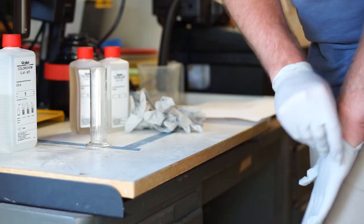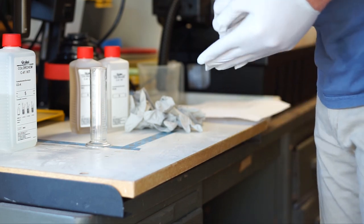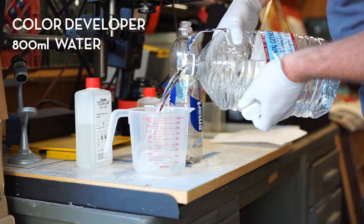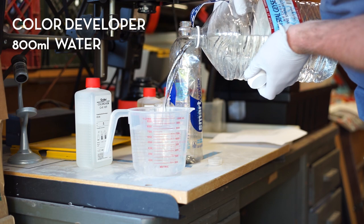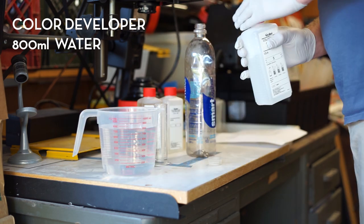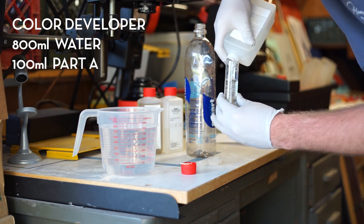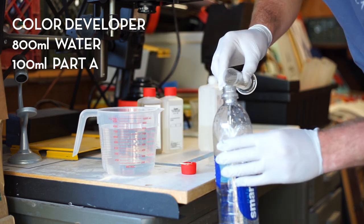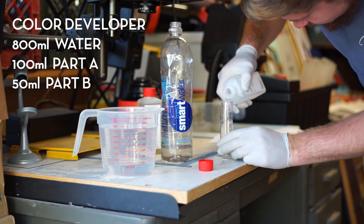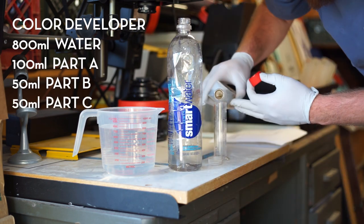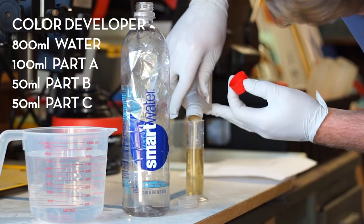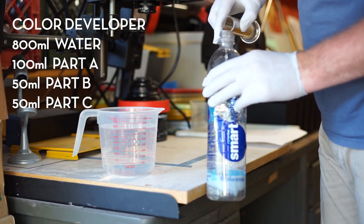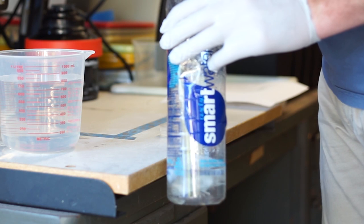Normally you would use distilled water, but I was out of it, so I just used some nice drinking water. To mix the color developer, you're going to take some water and have your chemicals right here. I actually use the Smart Water bottles because they fit exactly 1000 milliliters in there and you can seal them up so that no air gets in, and they are super cheap.